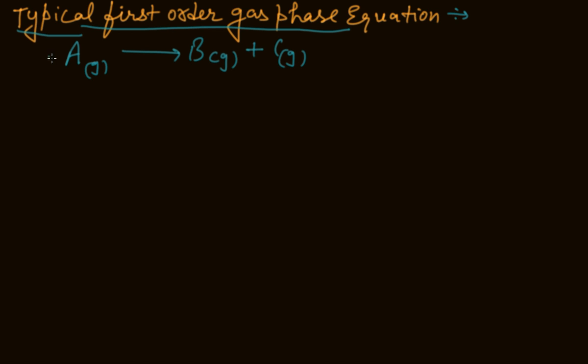In this we are taking the reaction A converting into B and C at time T. At time T equals zero, its initial concentration is Pi. Because it is a gas phase equation, concentration comes in terms of pressure. So its initial pressure is Pi, and it starts from 0 and 0.